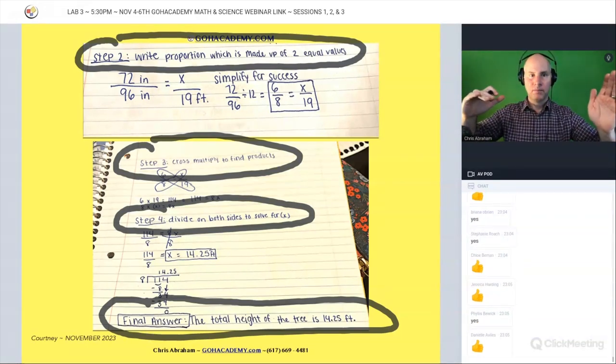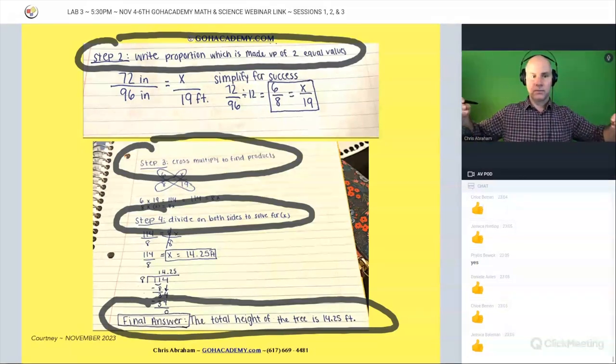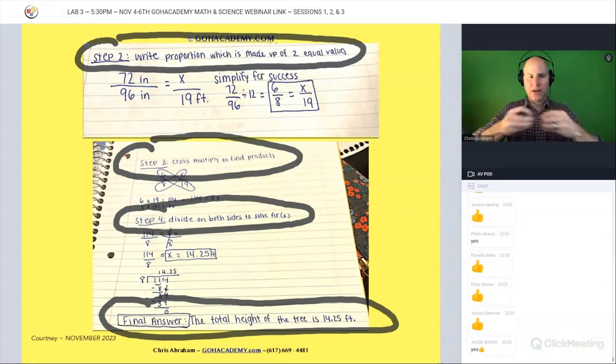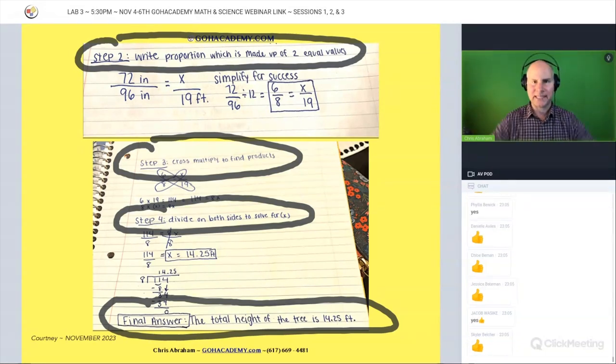Clean, right? Doesn't have to be long. Everyone's going to be different, but this is nice and clean, very direct, like a recipe. Step four: divide both sides to solve for x. Clean.